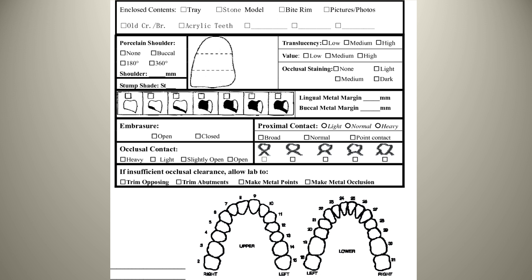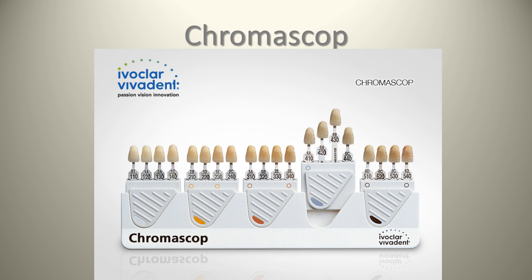Sending your lab a good shade is also important. I personally like using the Chromoscope from Ivoclar Vivadent, which really breaks things down in terms of the actual chroma of the tooth with different value differences built in. I've never had to send a patient for custom shading since I started using this shade guide, compared to the standard Vita A1/A2/A3 guide. I could never quite figure out the Vita 3D shade guide — it always seemed like a complicated game — so I've always found the Chromoscope very easy to use.